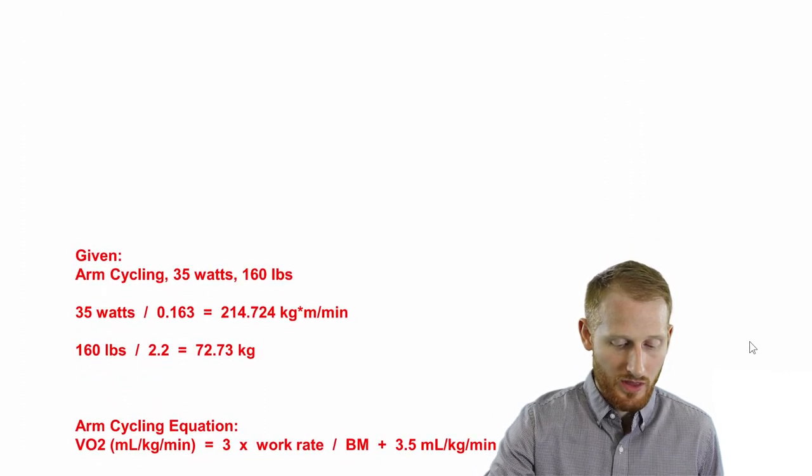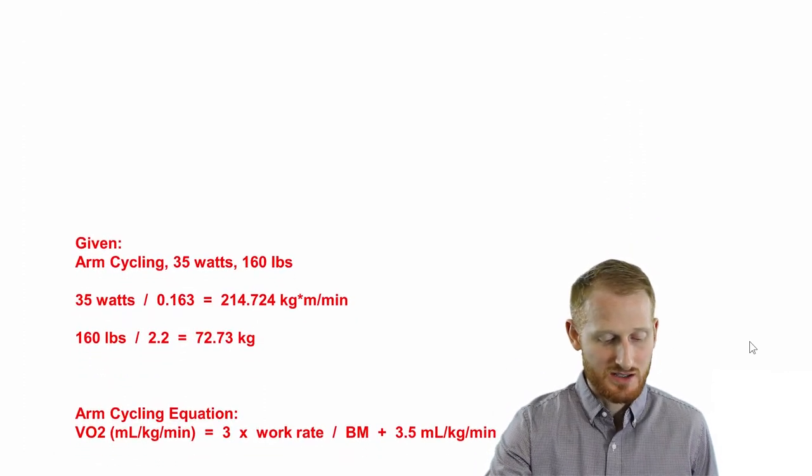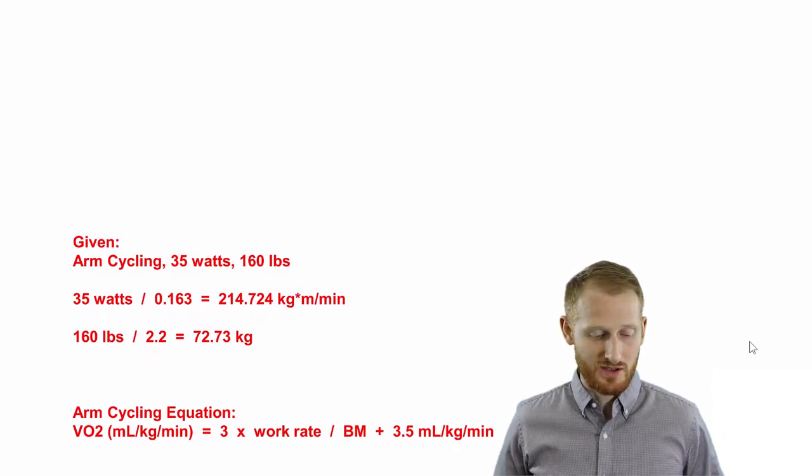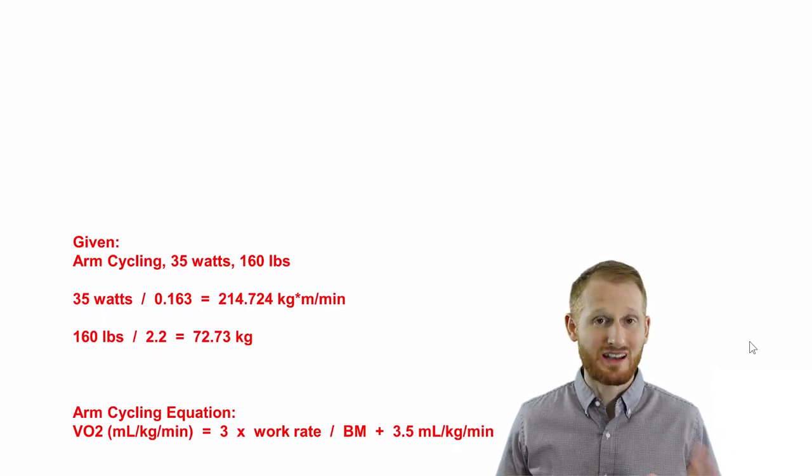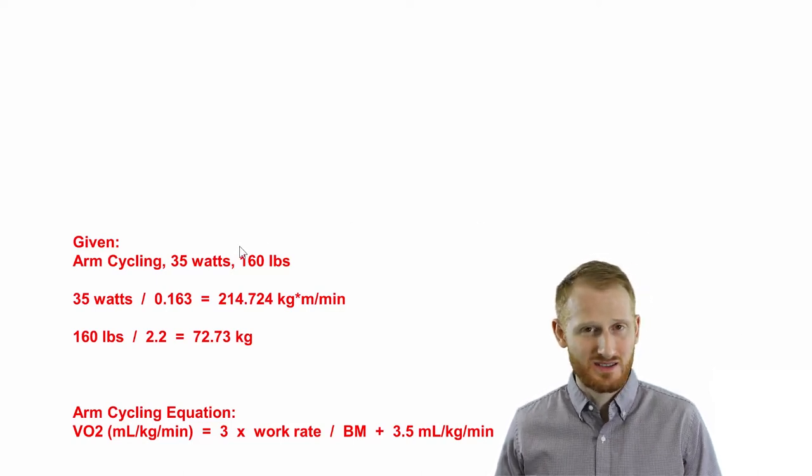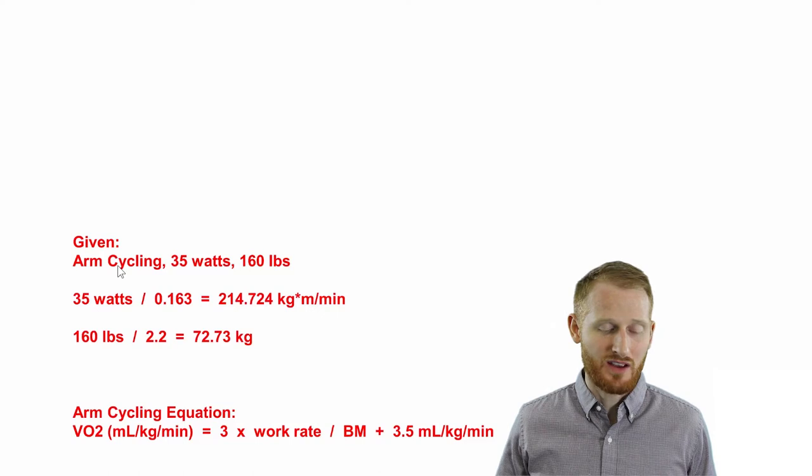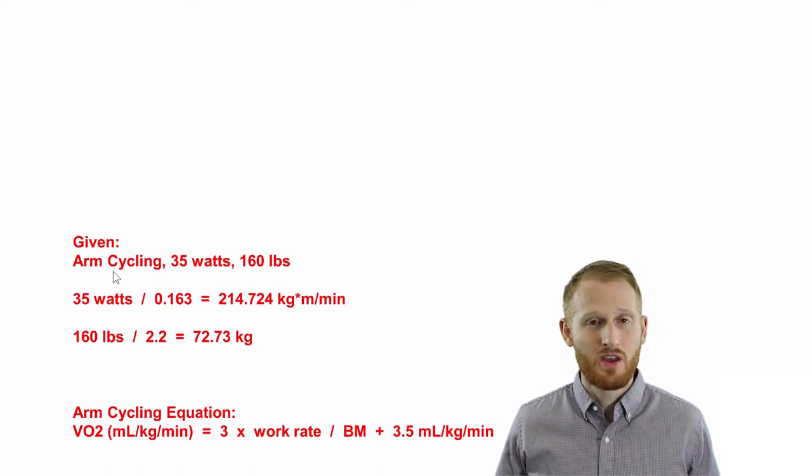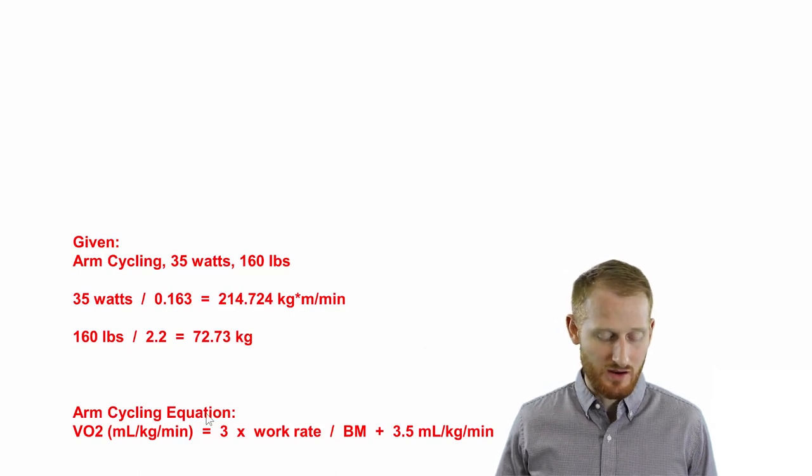So the next thing we need to do is we need to look at the equation that we have to use for all this. So this is the last given variable for us. And the only way it's given to us really is by the fact that we know that he's doing arm cycling. So we can go and look up the arm cycling equation, and that's what I have here.